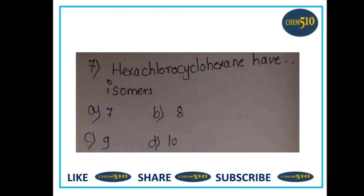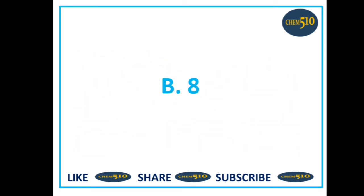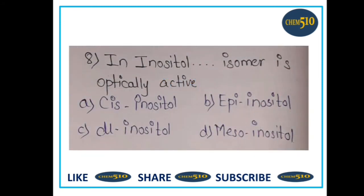Question seven: hexachlorocyclohexane has how many isomers? a) 7, b) 8, c) 9, or d) 10. Hexachlorocyclohexane has 8 isomers, so option B is correct, which is 8.